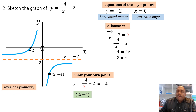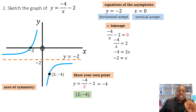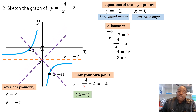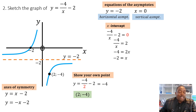For the axes of symmetry — one has positive gradient (y = x) and the other negative gradient (y = -x). Originally they sat at the origin, but because the graph has shifted two units down, the axes of symmetry shift the same way. The negative two from the equation automatically appears in the shifted equations of the axes of symmetry, as they move together with the graph.